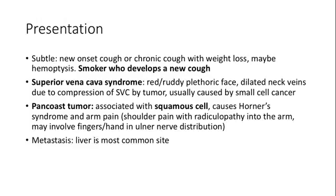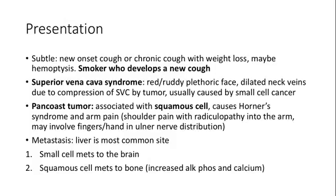The most common site of metastasis for all lung cancers together is the liver. But small cell likes to go to the brain, and squamous cell likes to go to the bone.